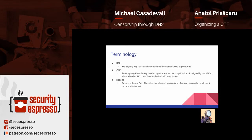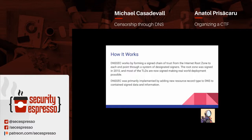A little bit of terminology for DNSSEC. KSK is what's known as a key signing key — basically the equivalent of a private key or master key for a given zone. The ZSK, or zone signing key, is a sub-key used to sign a zone. It is optional, but it allows for certain types of revocation or being able to keep the KSK offline. An RR set, or resource record set, is a collective whole of a given record type, like all the A records for a given zone. DNSSEC works by forming a signed chain of trust from the internet root zone to each endpoint through a system known as designated signers — the DS records. The root zone was signed in 2010, and most top-level domains are now signed, making real-world deployment possible.